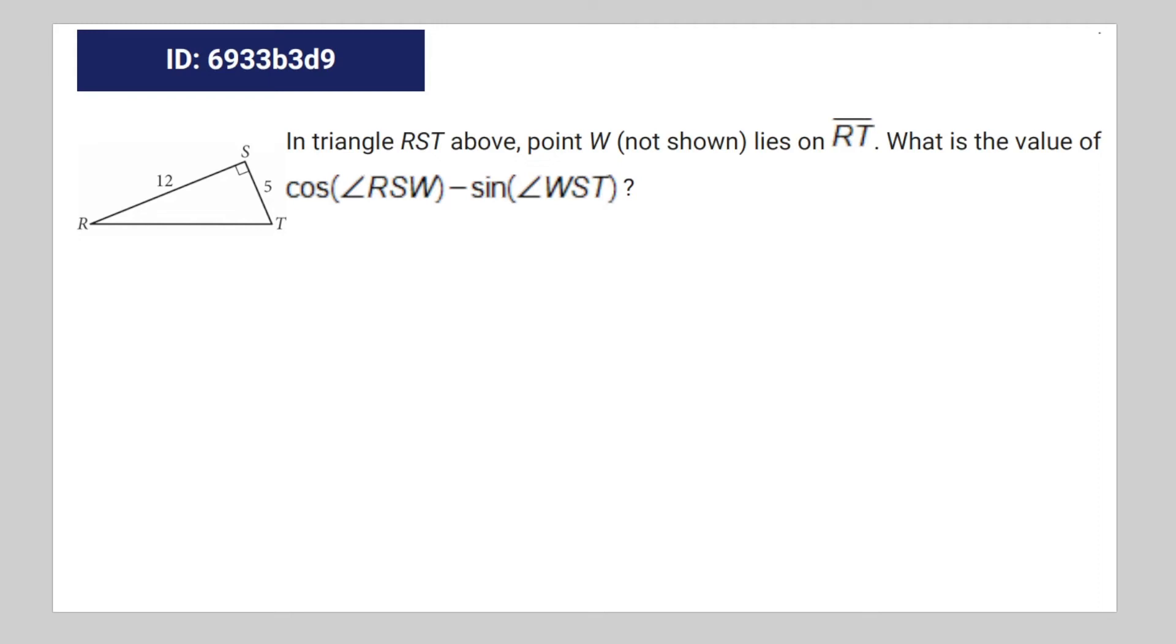We have this geometry and trig question. In triangle RST above, point W, not shown, lies on RT.